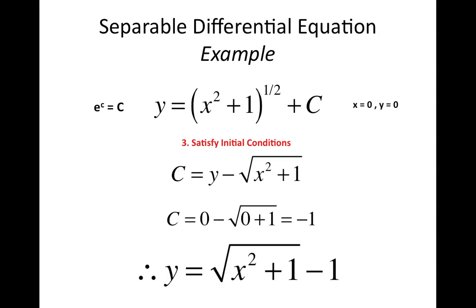Therefore our final y is equal to root x squared plus 1, close the root, minus 1. That's as simple as it comes when it comes to solving separable DEs. Just remember your three steps, separate, integrate, and satisfy initial conditions if given. If not, you would simply just keep the line you see at the top of this slide with respect to some value c as your final answer if no initial conditions were given.